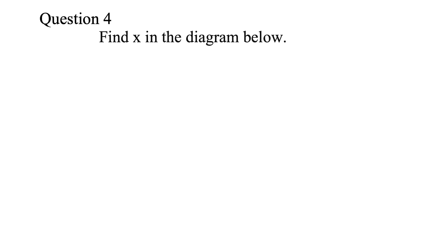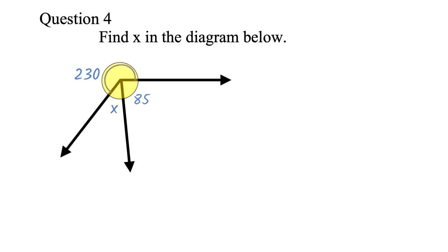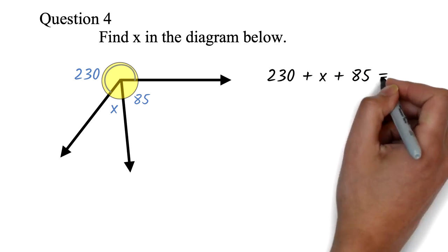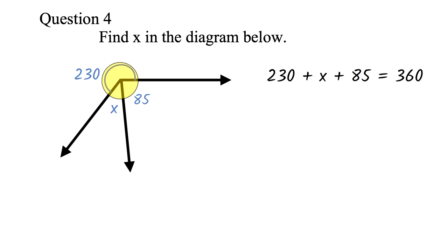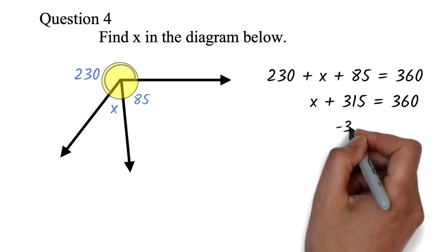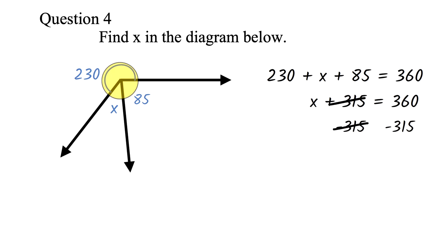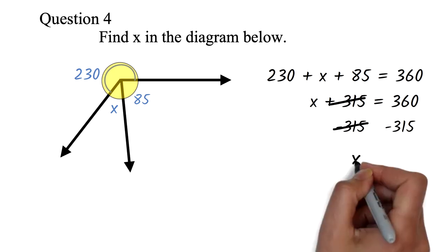Question 4: Find X in the diagram below. The work here is being able to identify that we are dealing with a full angle. A full angle is 360 degrees. Once you know that, you'll just add everything and equate it to 360. Then solve the resulting equation. So here, we will add 230 plus X plus 85 equals 360. We can add 230 plus 85 to get 315. So we have X plus 315 equals 360. We can subtract 315 from both sides. The 315 will cancel out. 360 minus 315 is 45. So X is 45.